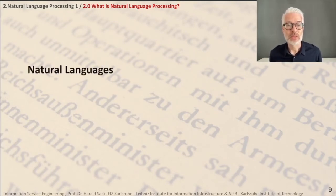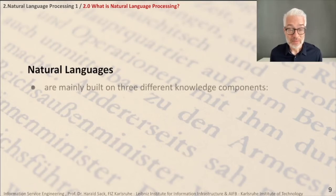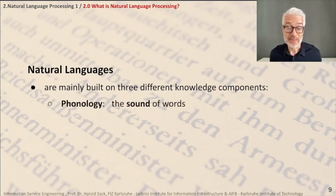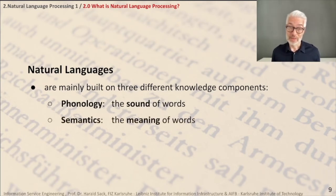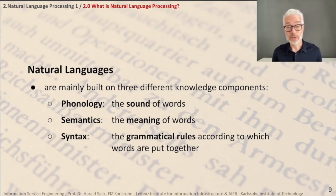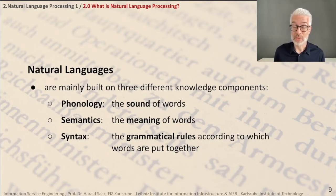Going back to natural languages — they are mainly built on three different fundamental components. First, phonology: that's the sound of the words. Second, semantics: this is the meaning of the words used in natural languages. And third, syntax: the grammatical rules according to which words are put together to form correct, well-formed sentences — correct from a grammatical sense, not necessarily from the meaning.